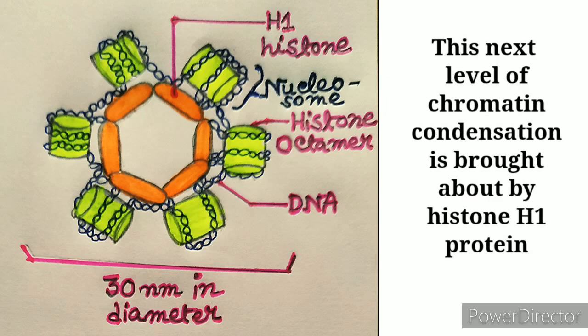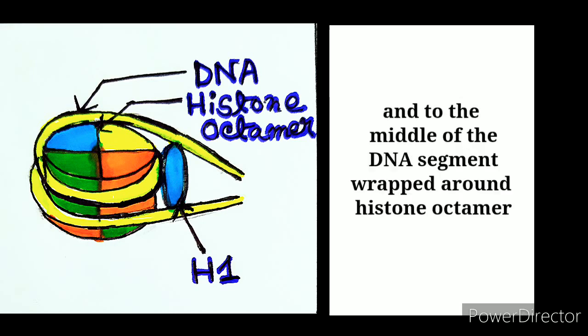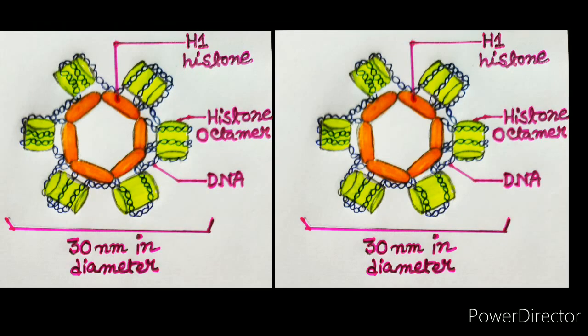This H1 histone protein binds to the linker DNA at one end of the nucleosome and to the middle of the DNA segment wrapped around the histone octamer. However, this H1 histone protein is needed to stabilize this more condensed form of chromatin.